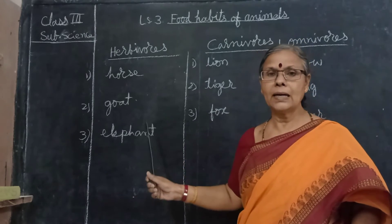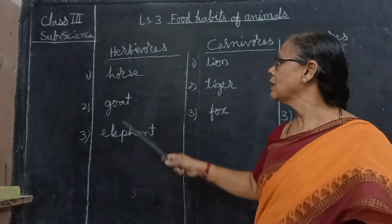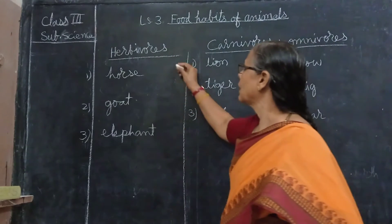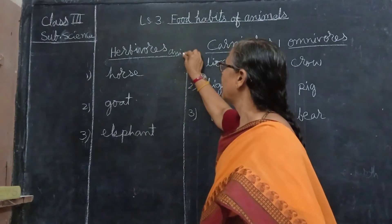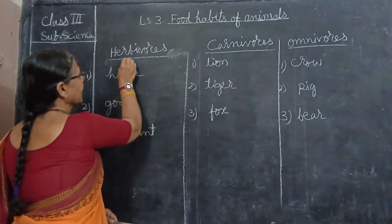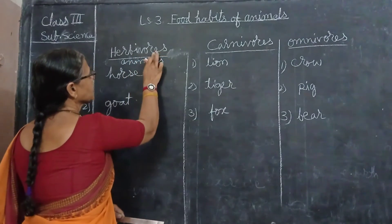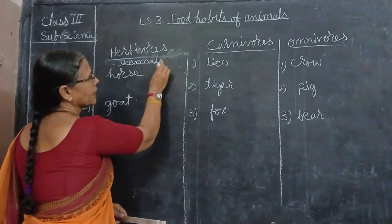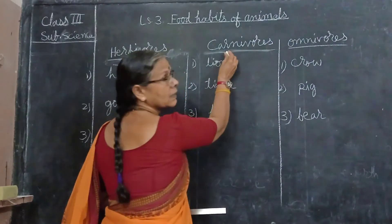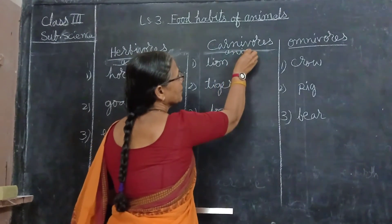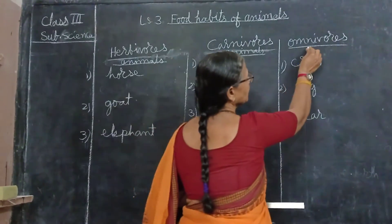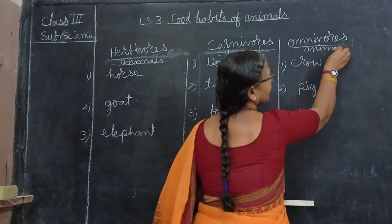You have to memorize the names along with the spellings. Carnivores animals — you can write like this: A-N-I-M-A-L-S. Carnivores animals. Herbivores animals — A-N-I-M-A-L-S. And omnivores animals — A-N-I-M-A-L-S. Make headings for each category.